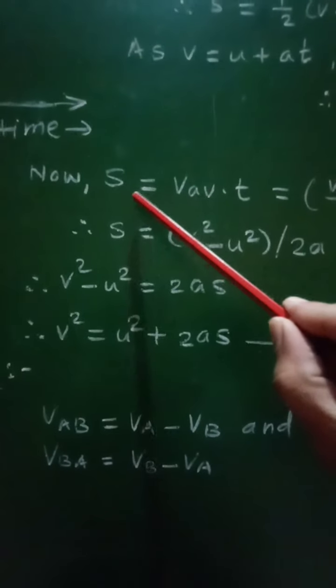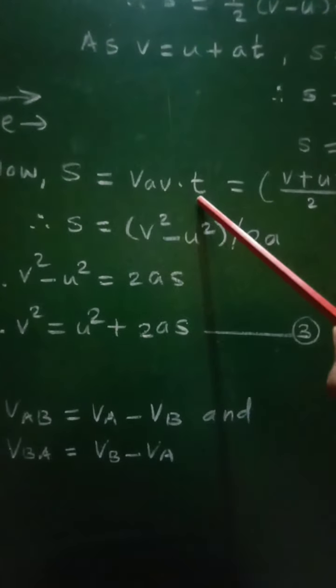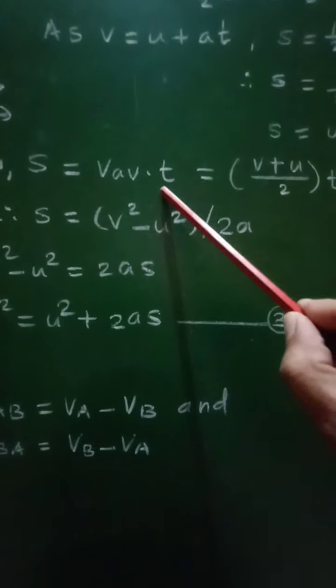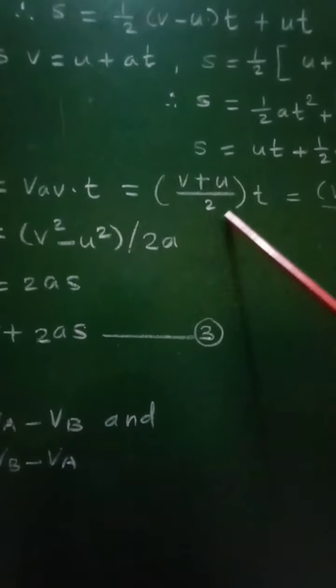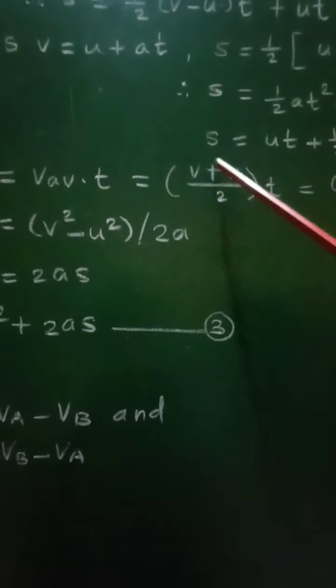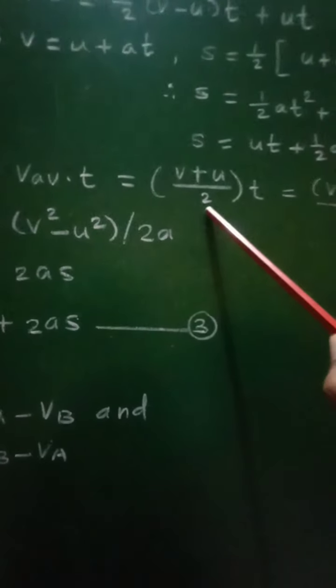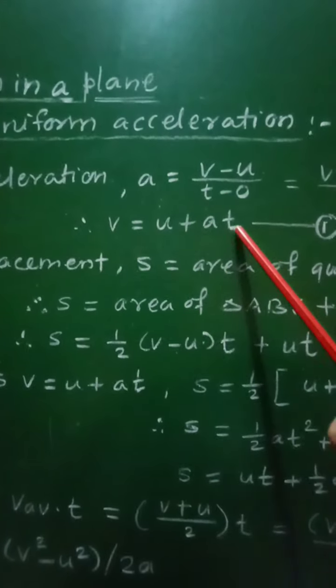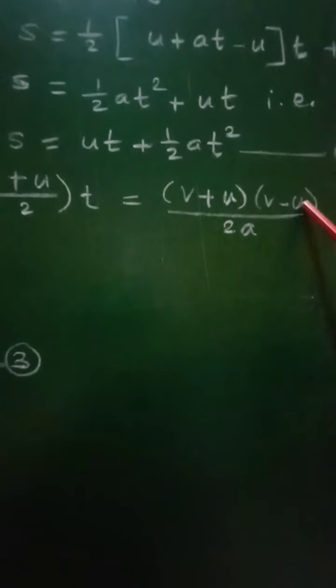In terms of average velocity, displacement S will be given as v_average into time, because velocity equals displacement upon time, so displacement equals velocity into time. So, v_average into t equals (v + u)/2 into t. From the first equation, since v = u + at, t will be replaced as t = (v − u)/a. Therefore, in place of t, we write (v − u)/a. So displacement S = (v + u)(v − u) upon 2a.